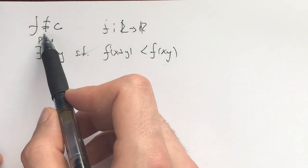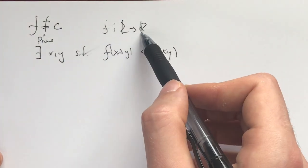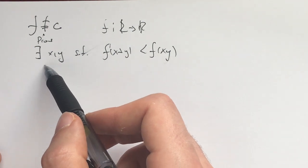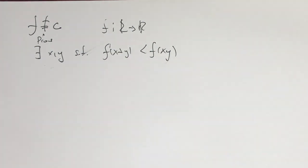The problem says we have a non-constant function from the real numbers to the real numbers, and we need to prove there exists x and y such that f(x+y) < f(xy).